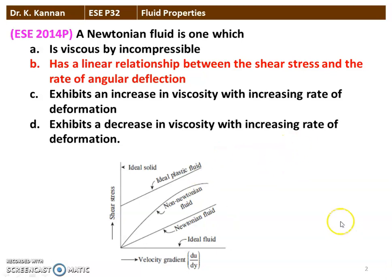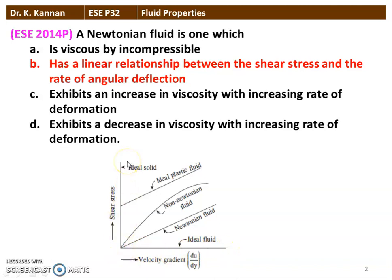Look at this diagram. The x-axis is the velocity gradient dU/dY and the shear stress is on the y-axis. These are all the characteristics of different fluids: Newtonian Fluid has a linear relationship with the velocity gradient; Non-Newtonian Fluid, Ideal Plastic Fluid, Ideal Solid, and Ideal Fluid are also shown. Ideal Fluid has no shear stress; Ideal Solid has no velocity gradient. So, Newtonian Fluid has a real linear relationship between shear stress and the rate of angular deflection.